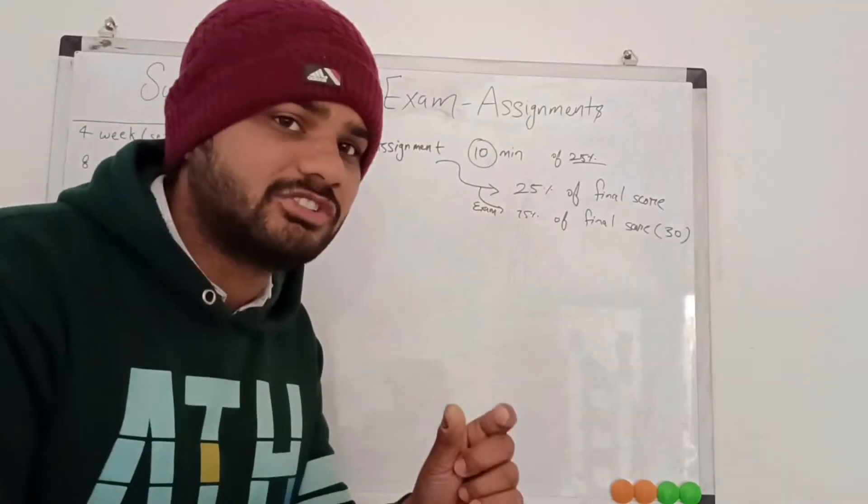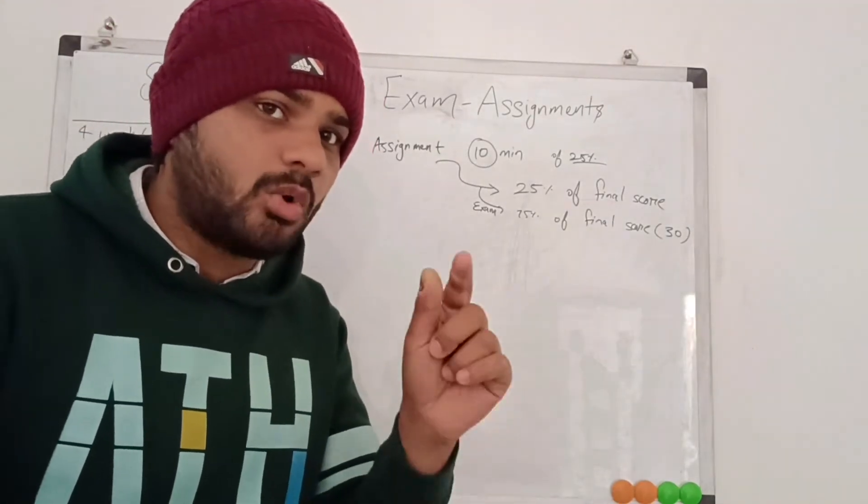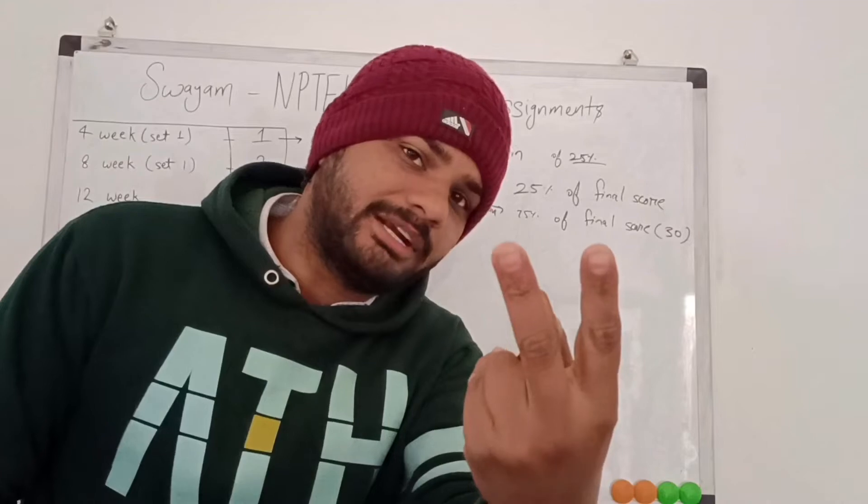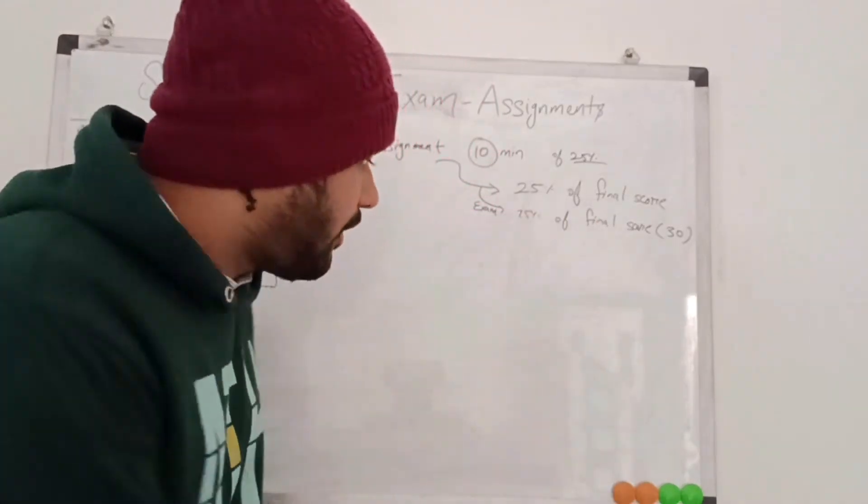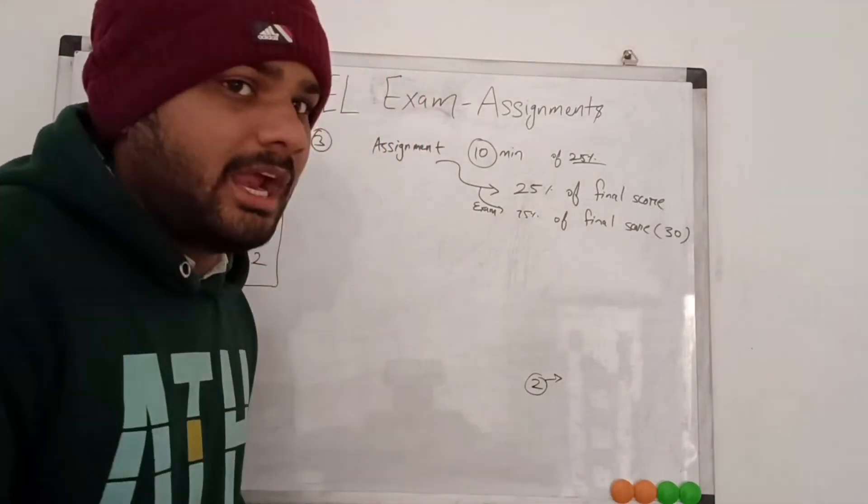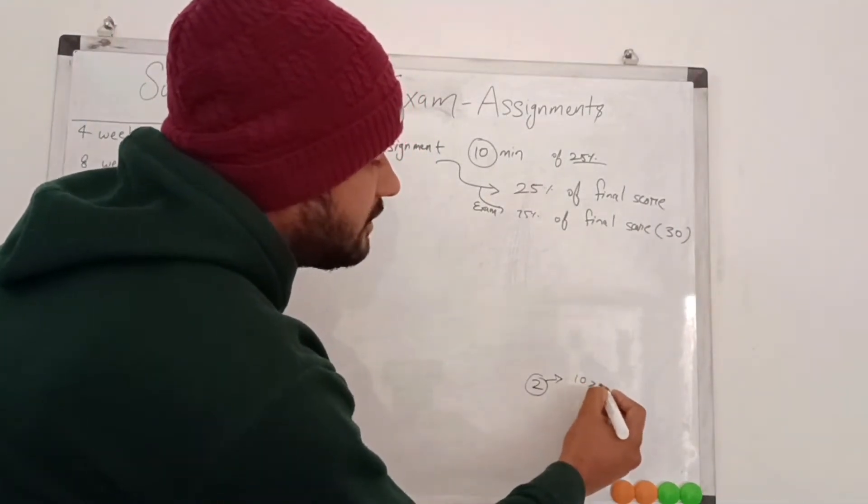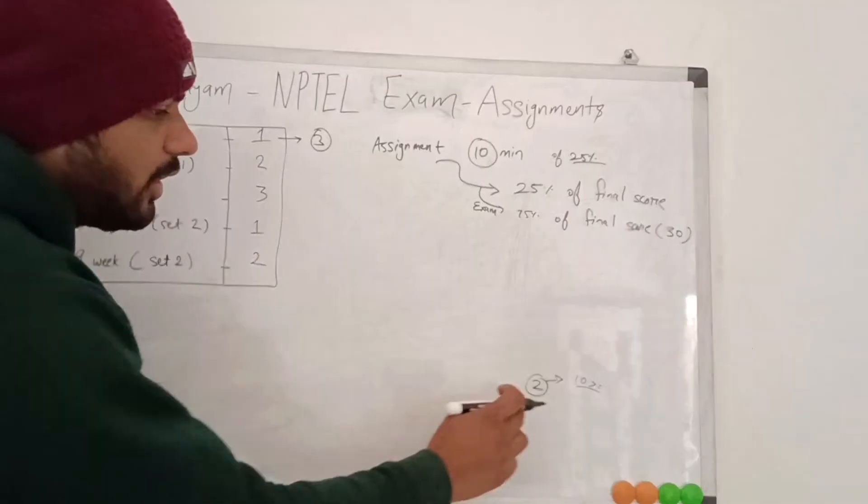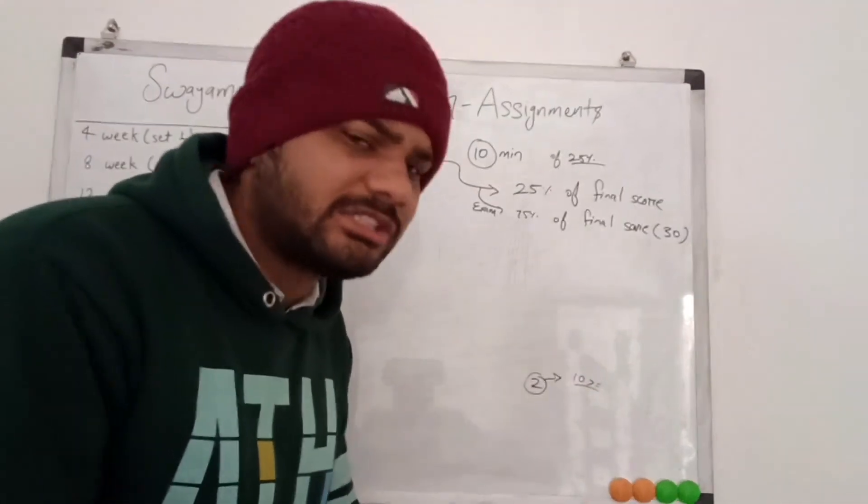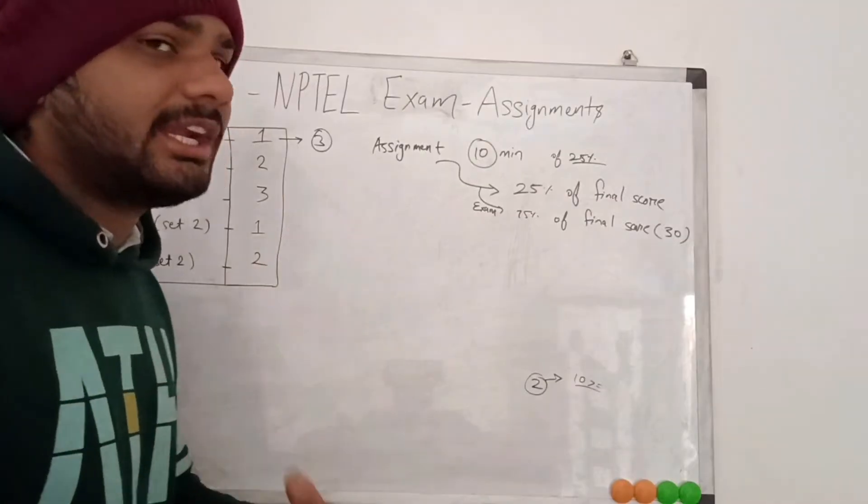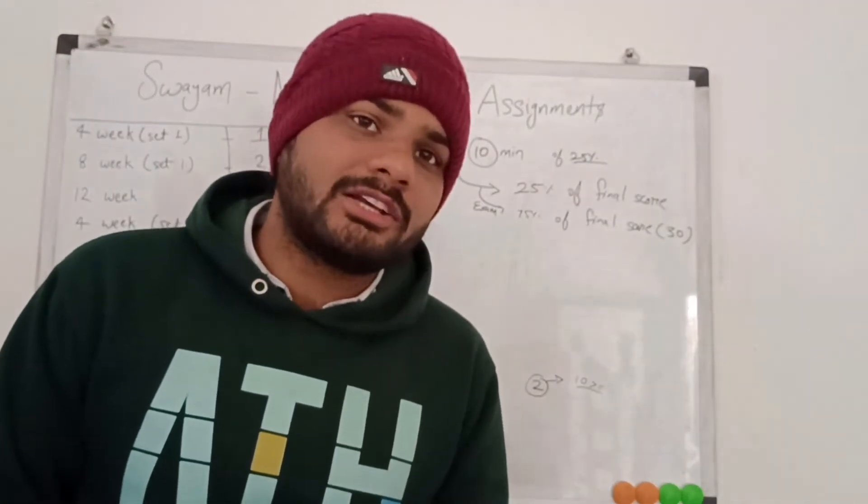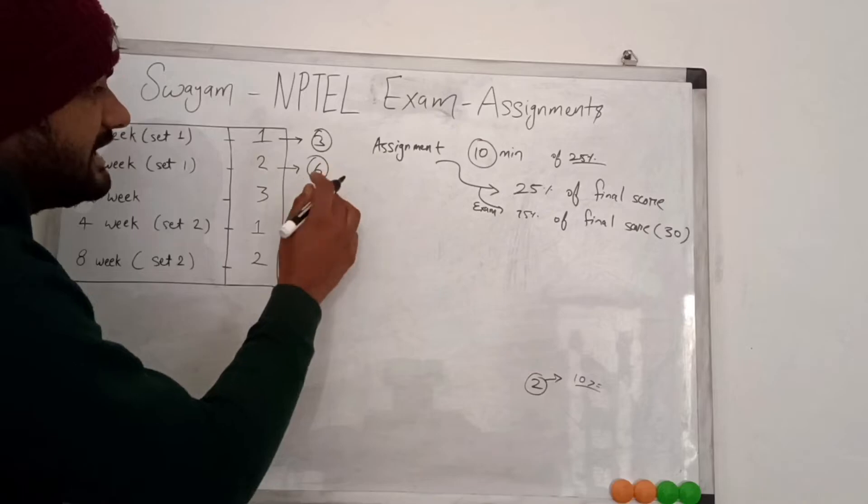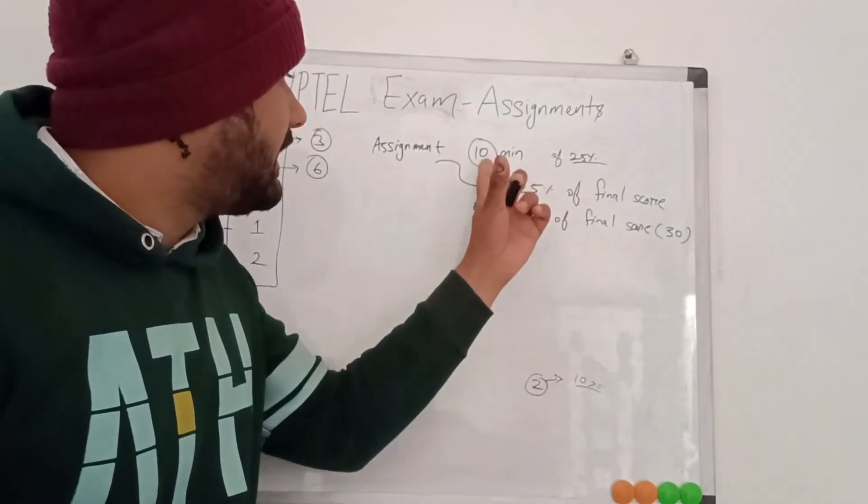In the 4 week, very important thing: only 3 best assignments will be considered. If you have given 4 assignments, only 3 best assignments will be considered. If you did only 2 assignments out of 4, then from those 2 assignments they will measure the marks. If they are more than or equal to 10, then you will pass the assignment score. If you have given 8 week exam, only 6 best assignments will be considered.